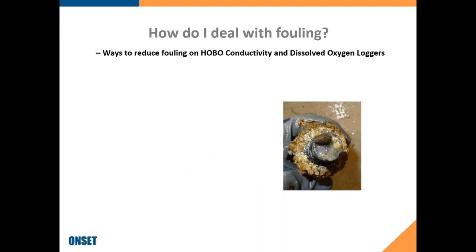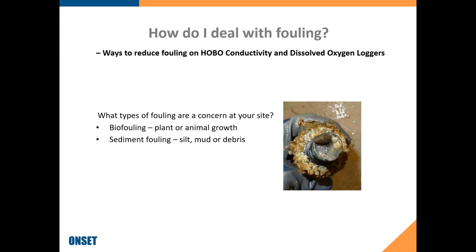For our conductivity and dissolved oxygen loggers, those sensors are sensitive to fouling on the sensor, so you really need to take additional measures to protect them. One of the things you want to ask yourself is what type of fouling are you concerned with at your site: is it bio-fouling — plant or animal growth on the sensor surface — or is it sediment fouling? Sometimes you'll have both, and the method you use can differ depending on which type is most prevalent.